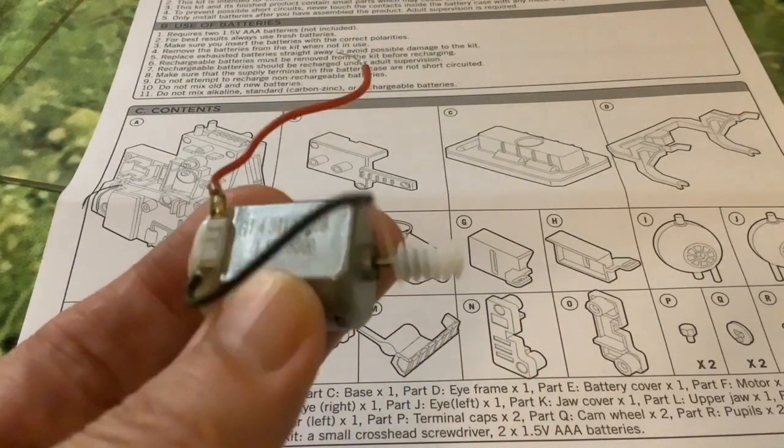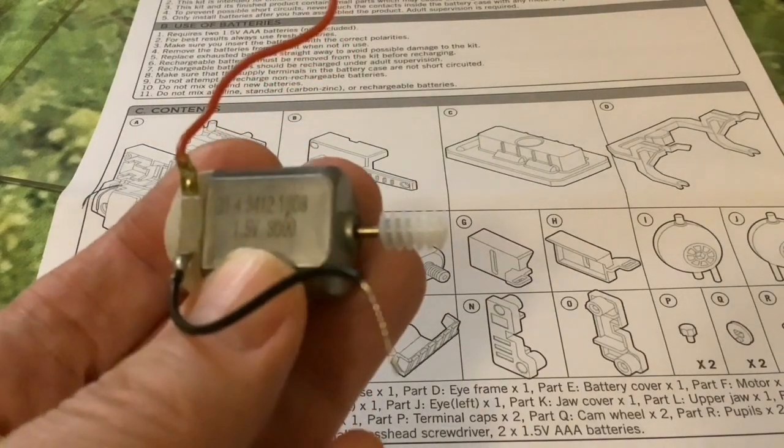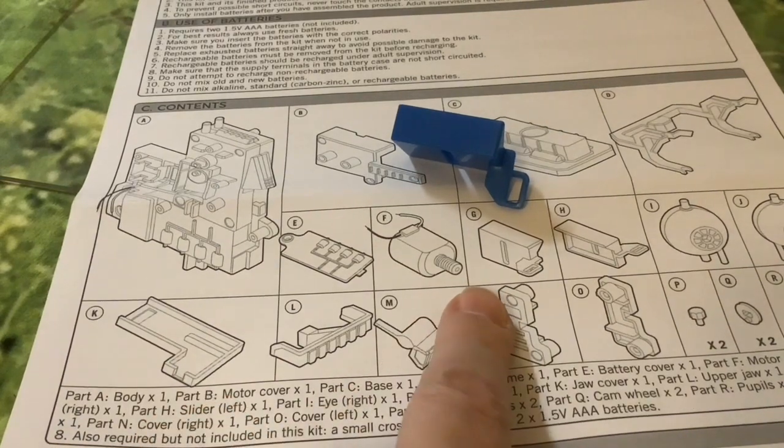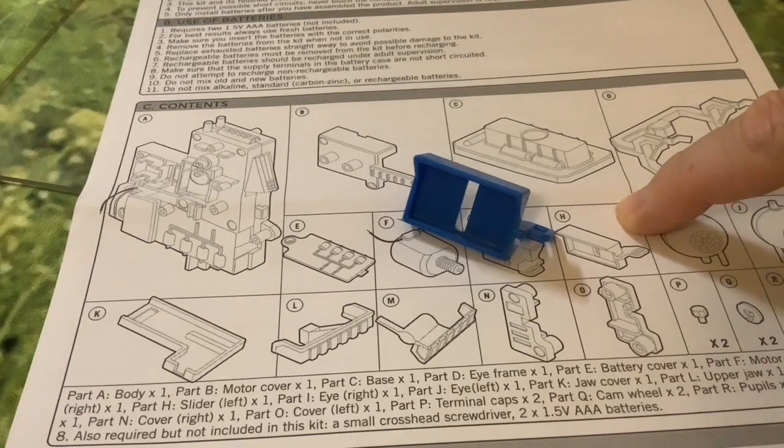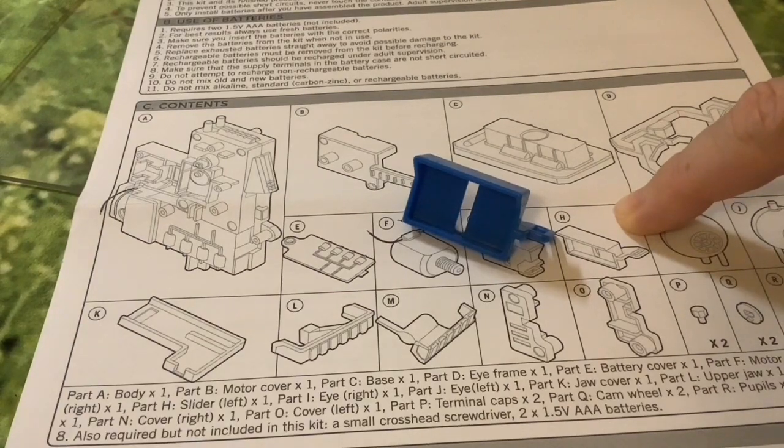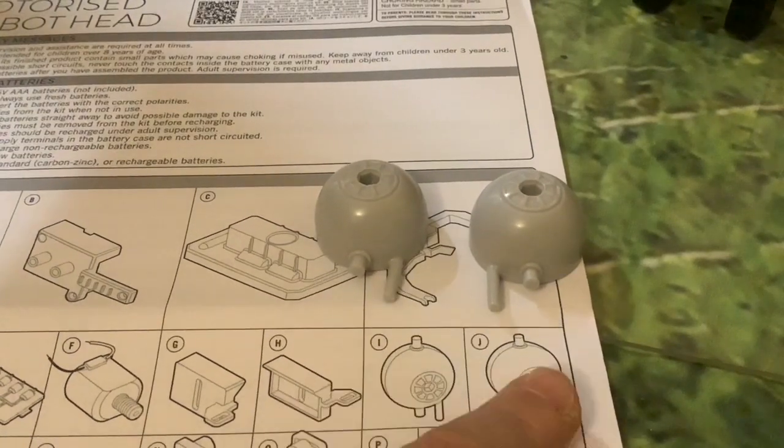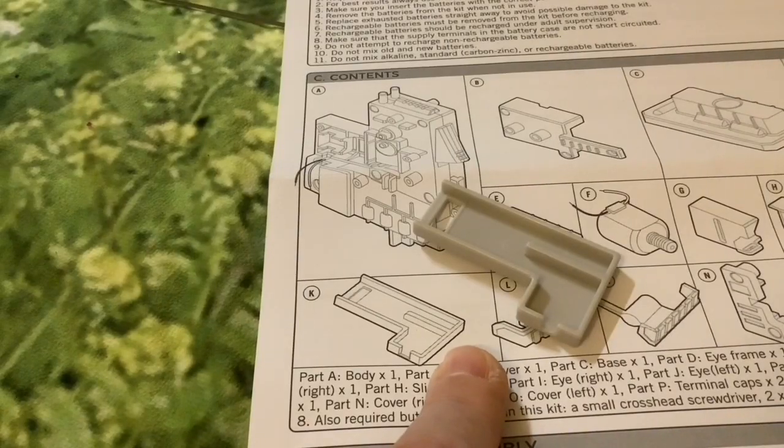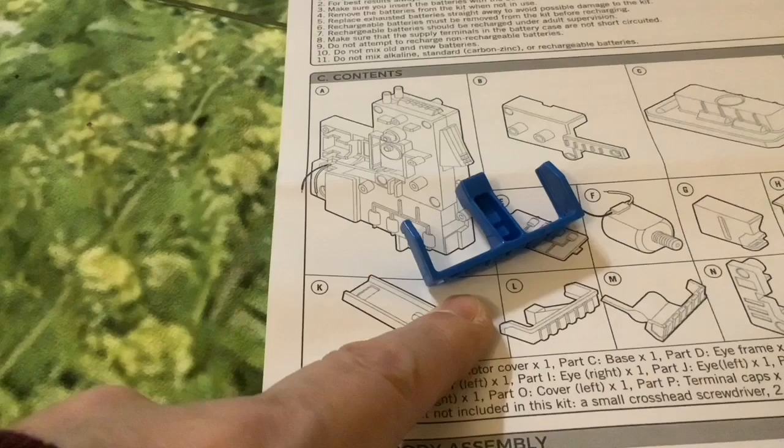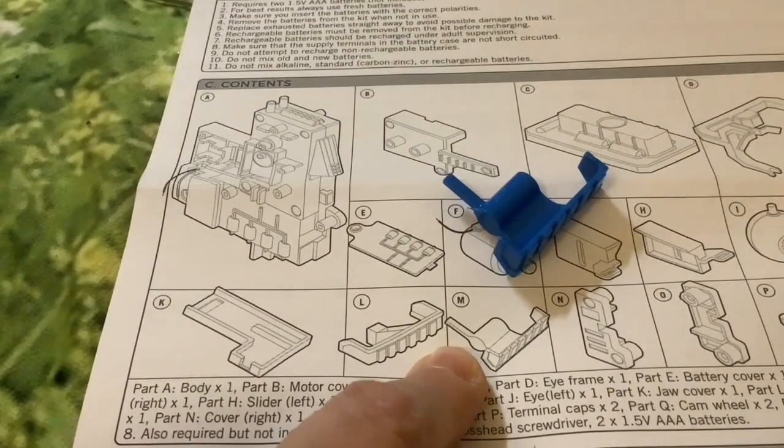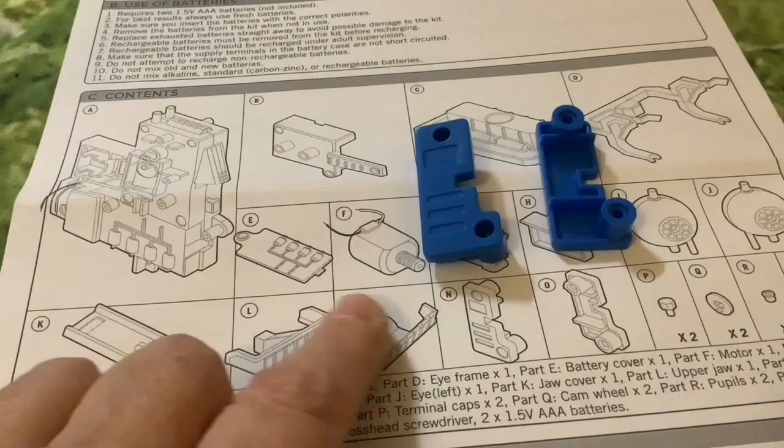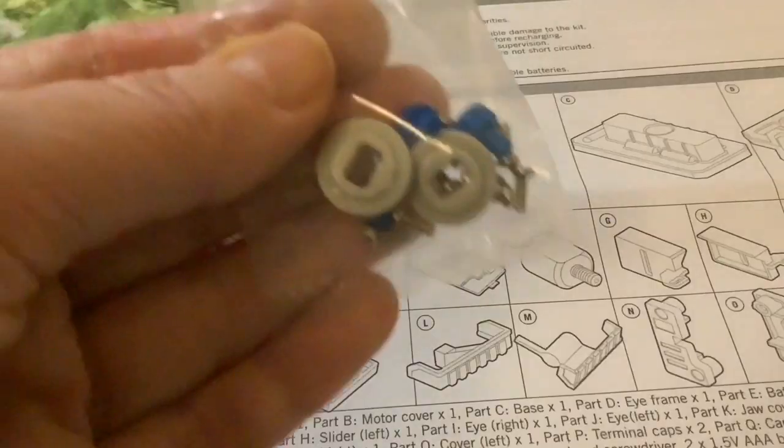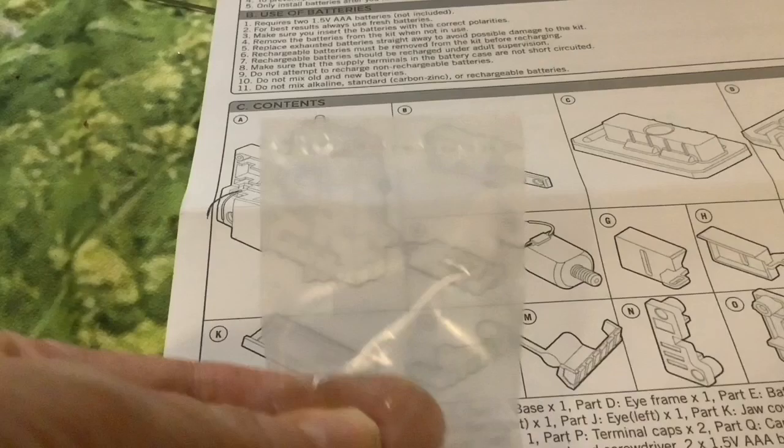Next we have G, which is referred to as slider right. Next we have H, slider left. Next we have parts I and J, I right and I left. Next we have K, jaw cover. Then we have L, upper jaw. Then we have M, lower jaw. Then we have N, cover right, and O, cover left. And finally we've got the small components in this little bag.